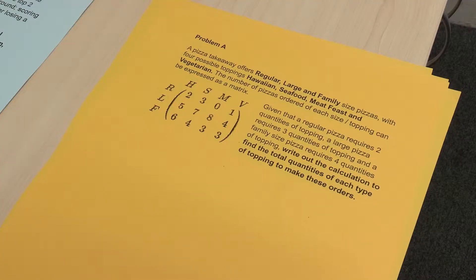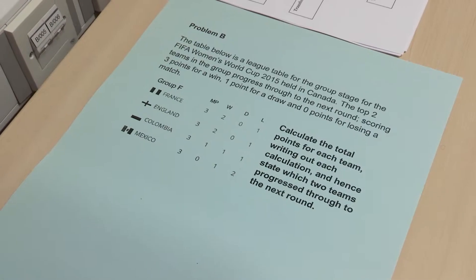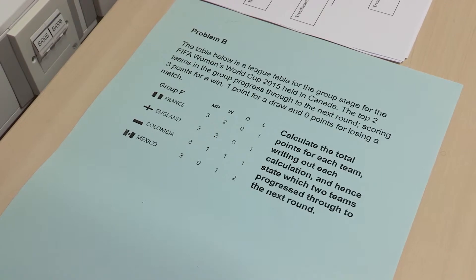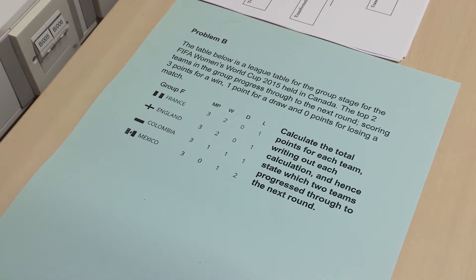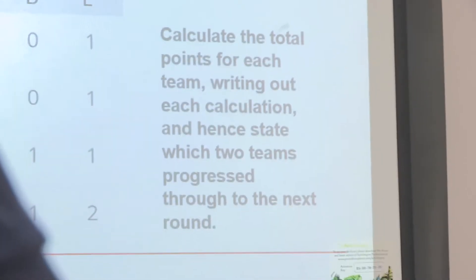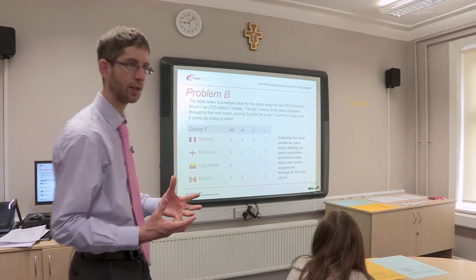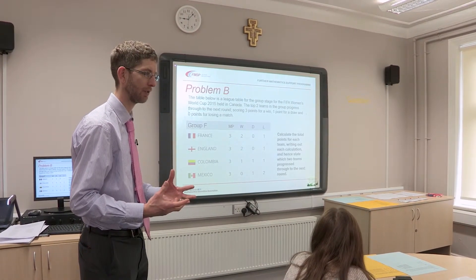We've got two scenarios. The first scenario is: you imagine running a pizza company. The question is about the most efficient way of working out how much of each type of topping you need. The second one is Women's World Cup 2015, and it's about calculating the amount of points each team gets. So again, is there an efficient way, mathematically, to get the answer?